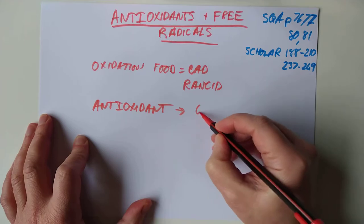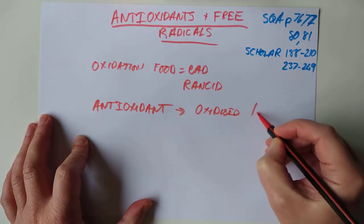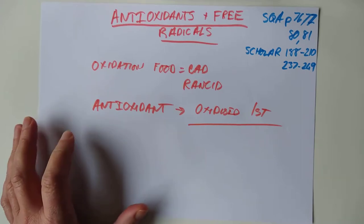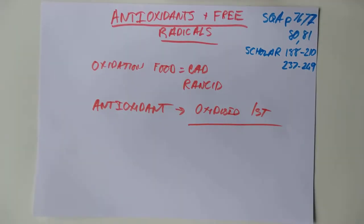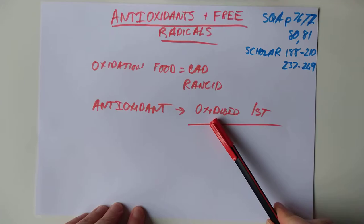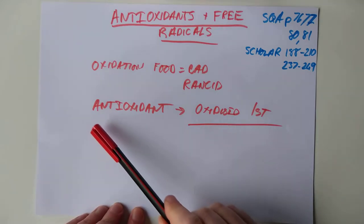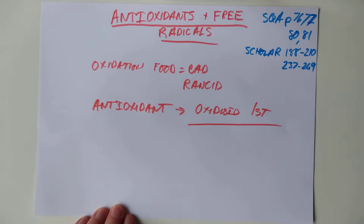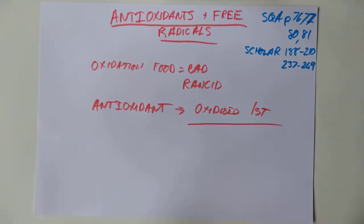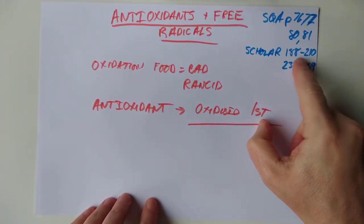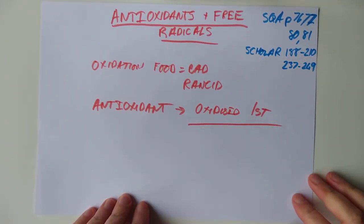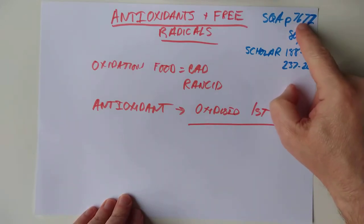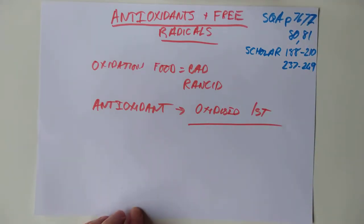So the antioxidant gets oxidised first. If you have already done the section on redox, you will realise that the substance which is being oxidised is a reducing agent. So that means reducing agents tend to be quite good antioxidants in this case. That's basically the first part of the video.